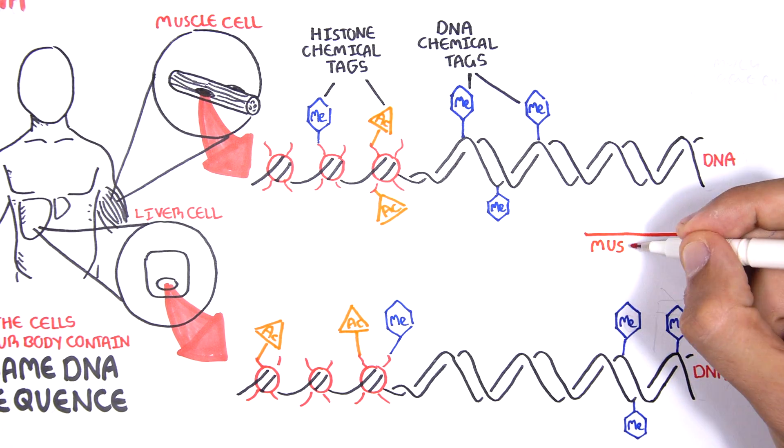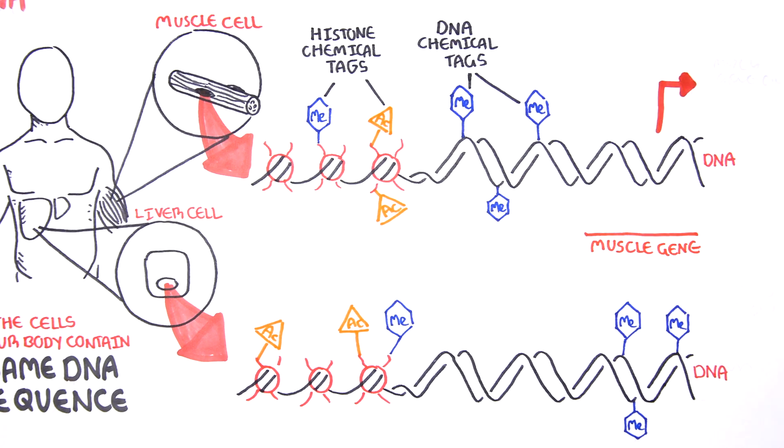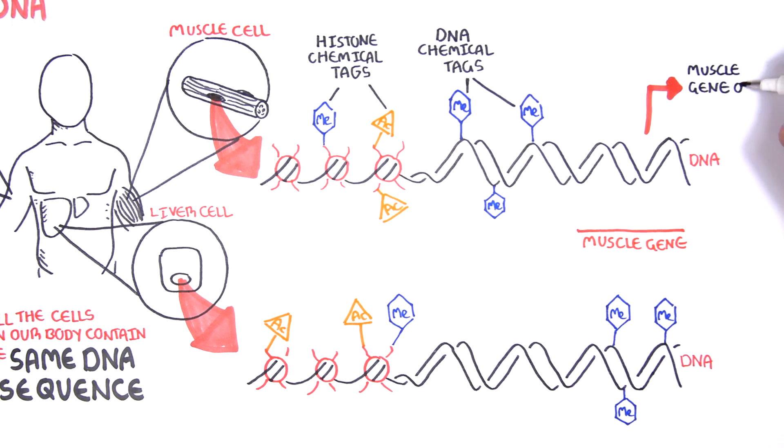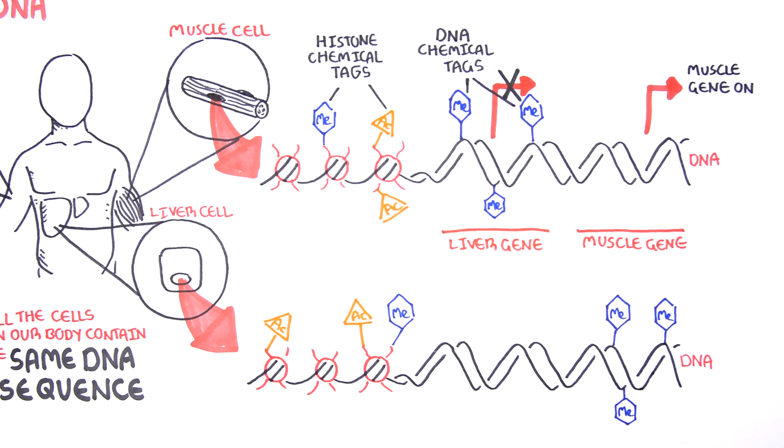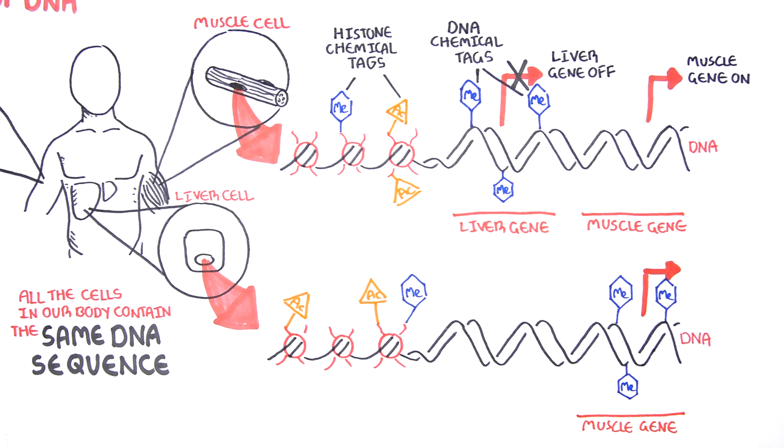For example, muscle cells will have genes turned on that a muscle cell requires and will turn off genes that a liver cell requires. Similarly, the liver cell will have genes turned off and genes that a liver requires turned on.